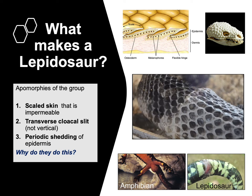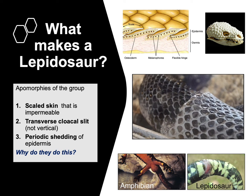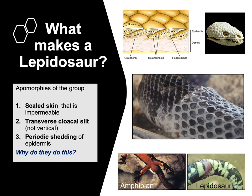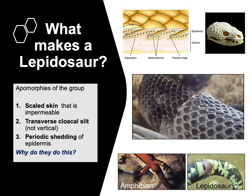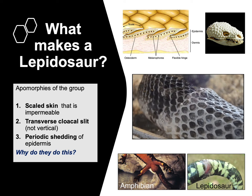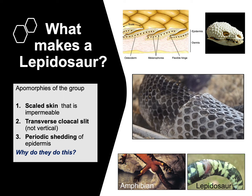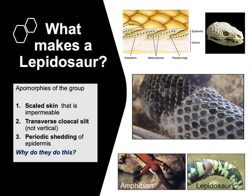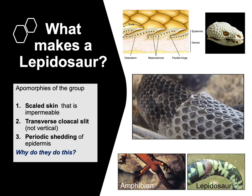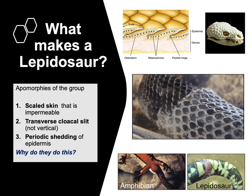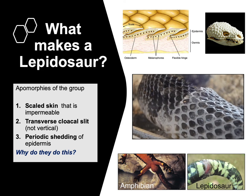It has to do with growth. They're growing osteoderms that aren't very flexible — once ossified, they stay hardened. As a snake or any other animal gets larger, it's going to be tightened by its skin and will have to shed as a result. That epidermal layer gets shed with a new layer growing underneath it.